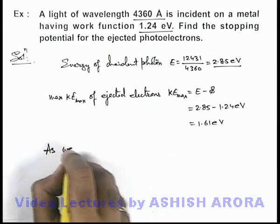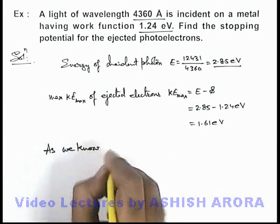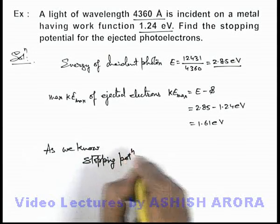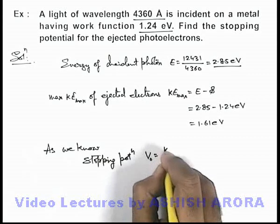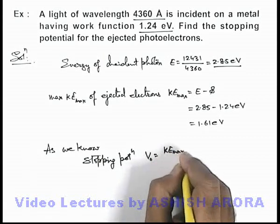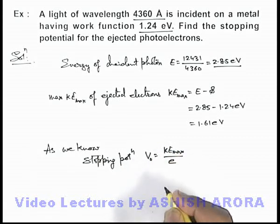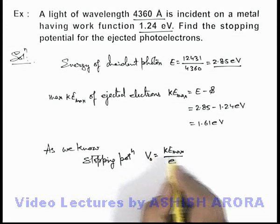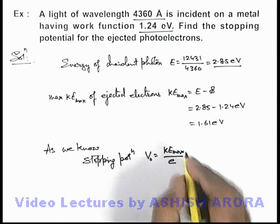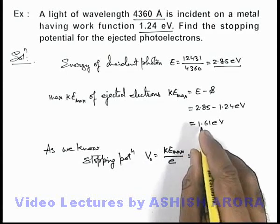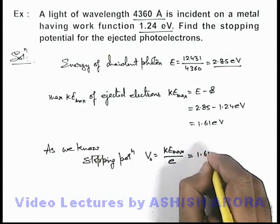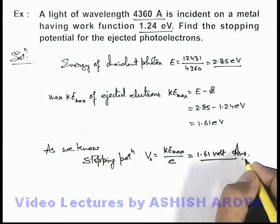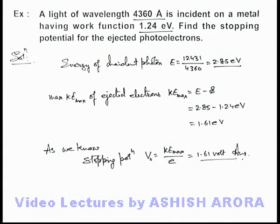As we know, the stopping potential is given as V₀ equal to the maximum kinetic energy divided by the charge of an electron, because stopping potential is the potential which stops the fastest electron. So this will be 1.61 electron volt divided by e, which is 1.61 volt. That is the answer — the stopping potential for these photoelectrons.